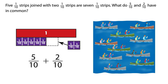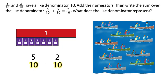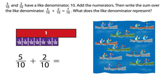Five one-tenth strips joined with two one-tenth strips are seven one-tenth strips. What do five-tenths and two-tenths have in common? Five-tenths and two-tenths have a like denominator. Ten. Add the numerators. Then, write the sum over the like denominator. Five-tenths plus two-tenths equals seven-tenths.